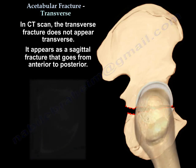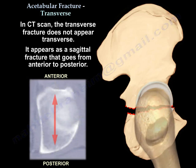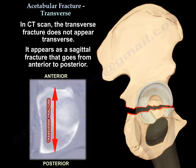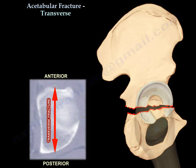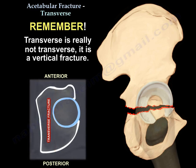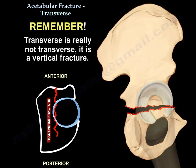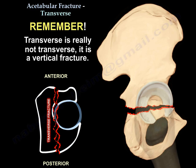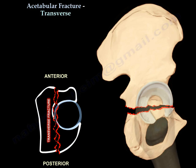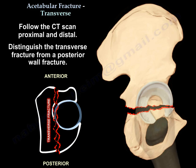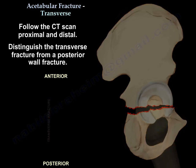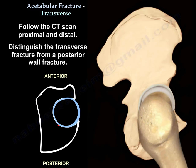On CT scan, the transverse fracture does not appear transverse — it appears as a sagittal fracture going from anterior to posterior. Remember: transverse is really not transverse; it is a vertical fracture on CT. Follow the CT scan proximally and distally to distinguish a transverse fracture from a posterior wall fracture.